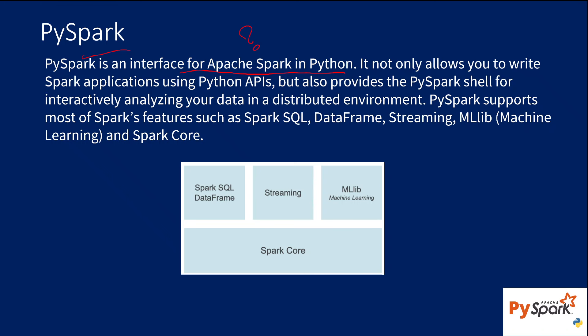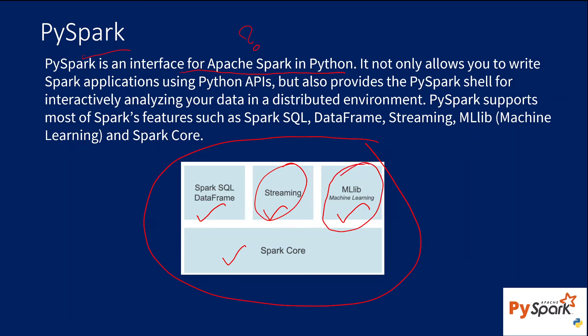This image here shows simply how the Spark architecture is. There is a Spark core engine, and on top of it you have Spark SQL and DataFrame capabilities, streaming capabilities, and machine learning capabilities. If your data is from streaming platforms, you can still use Spark to analyze or process it, or build machine learning pipelines on top of it. Spark SQL and DataFrame capabilities help you process data very easily — similar to SQL capabilities — on big datasets.